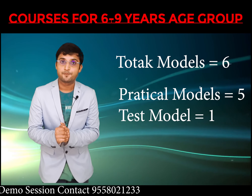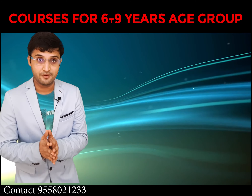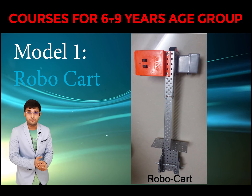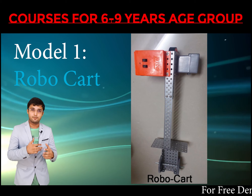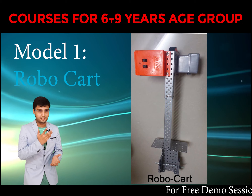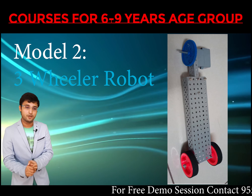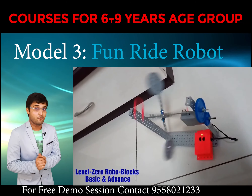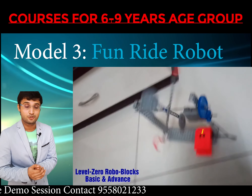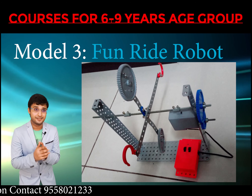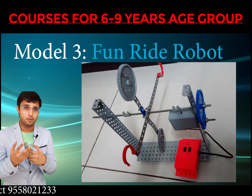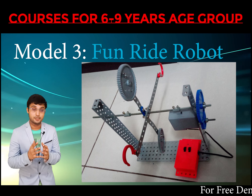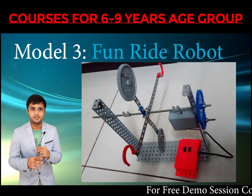The first model in level one is a Robo Cart, where the kid uses metal plates, motors, and a remote to build a complete model. The second model is a Three Wheeler robot that looks like a merry-go-round ride. Here kids learn what a gear is, its importance, and how to increase speed using gears.